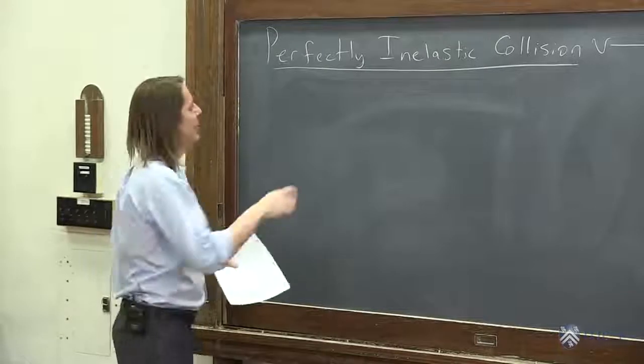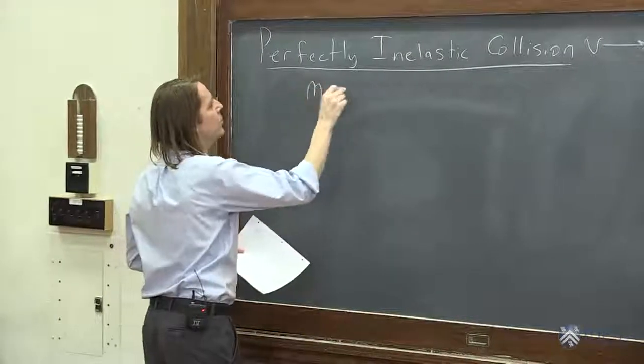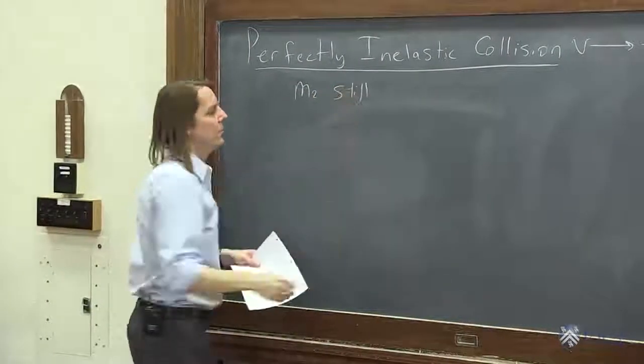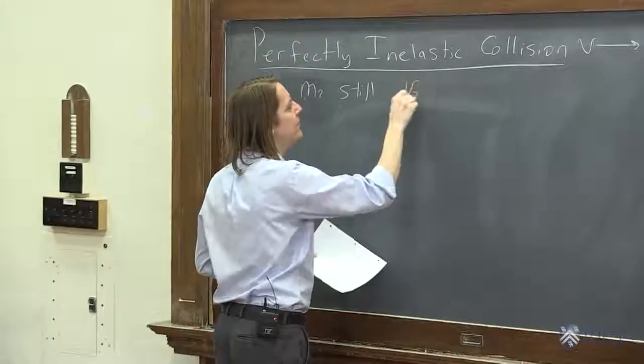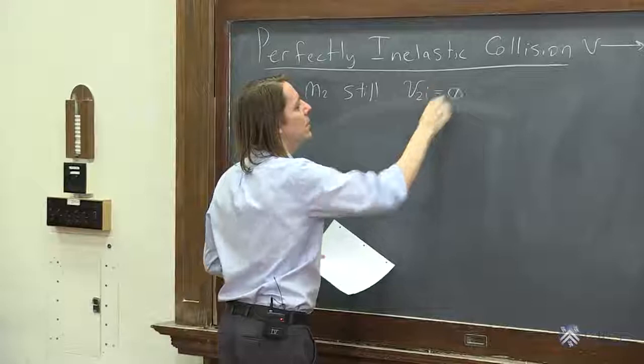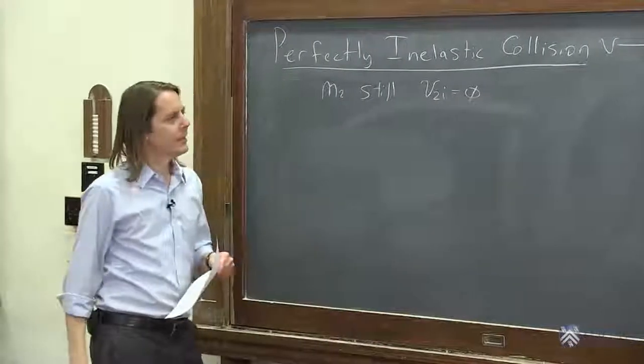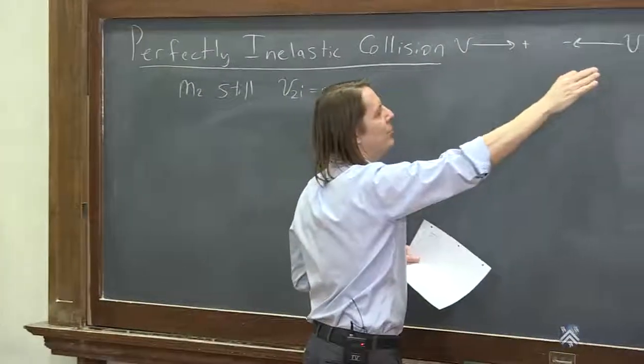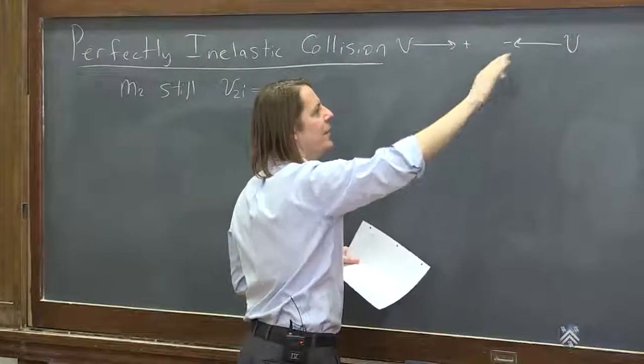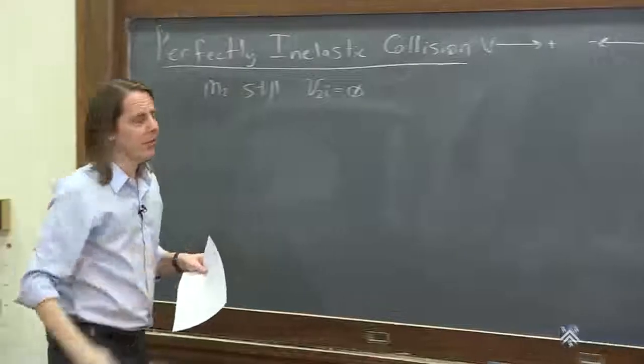And we're going to start even simpler than that, is M2 is going to be still. We're just going to let M1 crash into M2. So what that means is V2 initial is going to be equal to zero. We're going to dispense with the vector notation for now. We're just going to go with vector components. So if it's a positive sign, it's to the right. If it's negative, it's to the left.